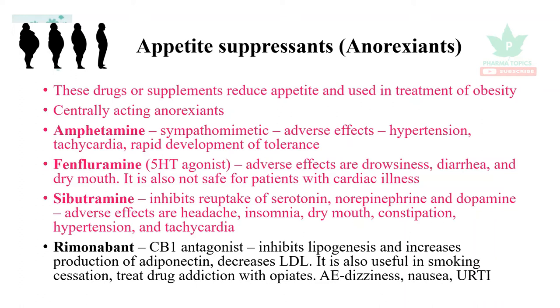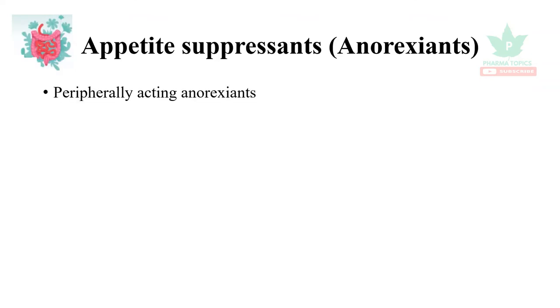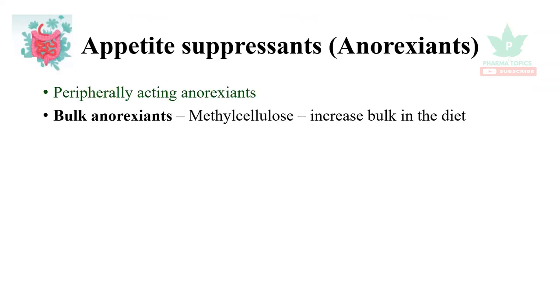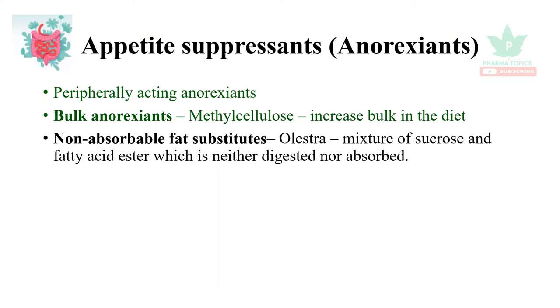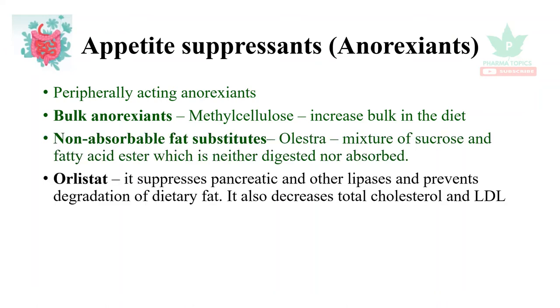upper respiratory tract infections. The peripherally acting anorexians are bulk anorexians such as methylcellulose — they increase the bulk in the diet and increase the feeling of satiety. Non-absorbable fat substitutes such as olestra, a mixture of sucrose and fatty esters, are neither digested nor absorbed. Orlistat suppresses pancreatic and other lipases and prevents degradation of dietary fat; it also decreases total cholesterol and LDL cholesterol levels.